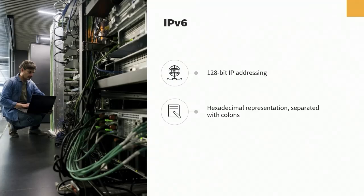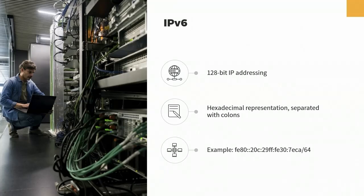Instead of dots separating octets, IPv6 uses hexadecimal representation — base 16, not base 10. Hexadecimal counts from zero to nine, then uses letters A through F, where A means 10 and F means 15, giving 16 placeholders. Portions are separated not by a dot but by a full colon — instead of an octet, you have a hexet. Two colons together are shorthand for a group of zeros. The network mask is represented as slash 64.